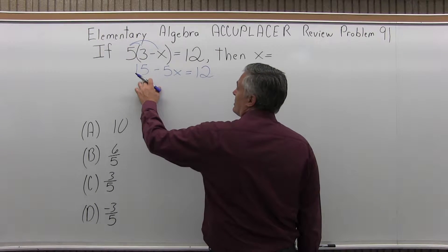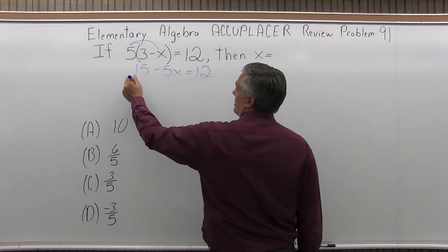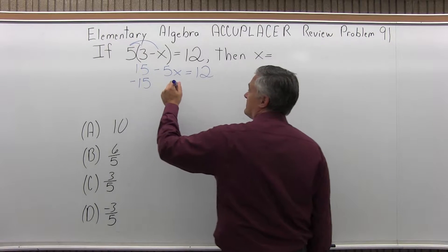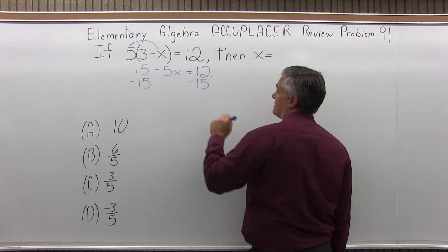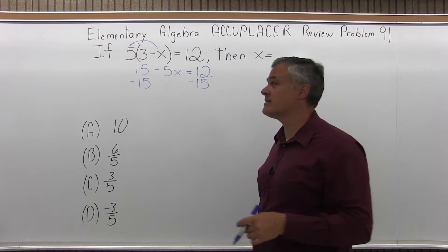Now, let me get rid of the 15. So on the left side of my equation, I'm going to do minus 15, which means on the right side of the equation, I also have to do minus 15. Whatever I do on one side, I have to do exactly the same on the other.